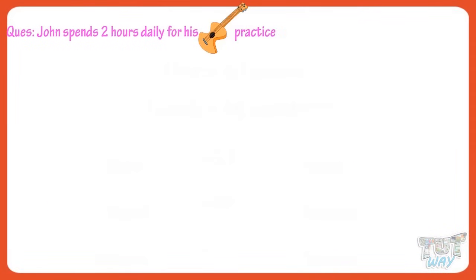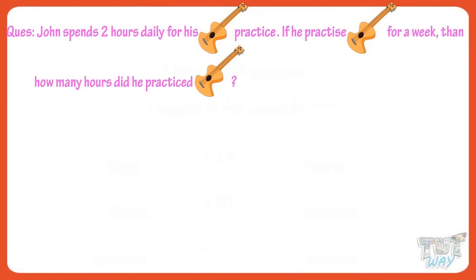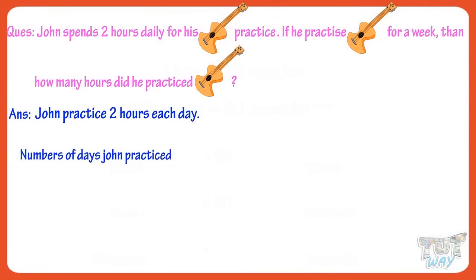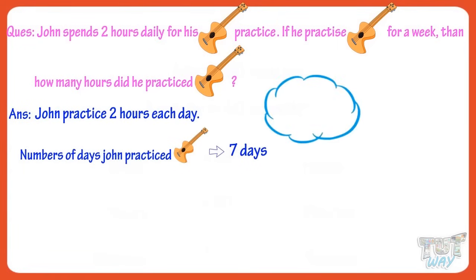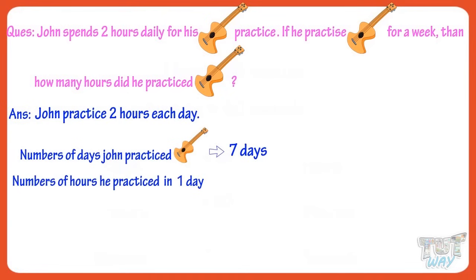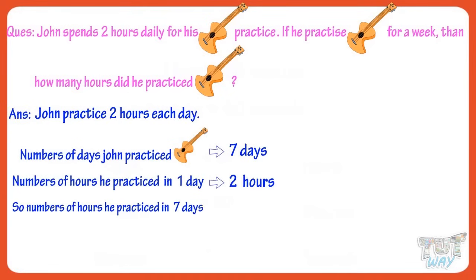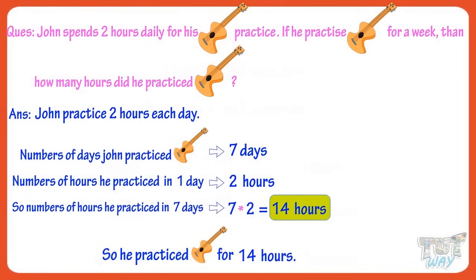John spends two hours daily for his guitar practice. If he practiced guitar for a week, then how many hours did he practice guitar? John practiced two hours each day. The number of days John practiced guitar is seven days, as one week has seven days. The number of hours he practiced in one day are two hours. So the number of hours he practiced in seven days will be 7 multiplied by 2, that is 14 hours. So he practiced guitar for 14 hours in total.